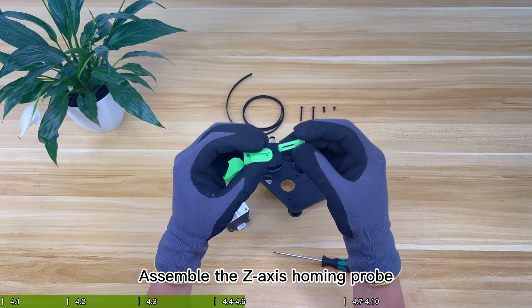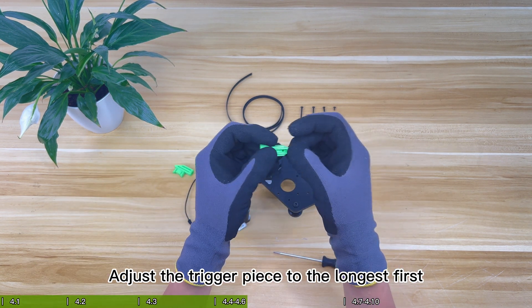Assemble the Z-axis homing probe. Adjust the trigger piece to the longest first.